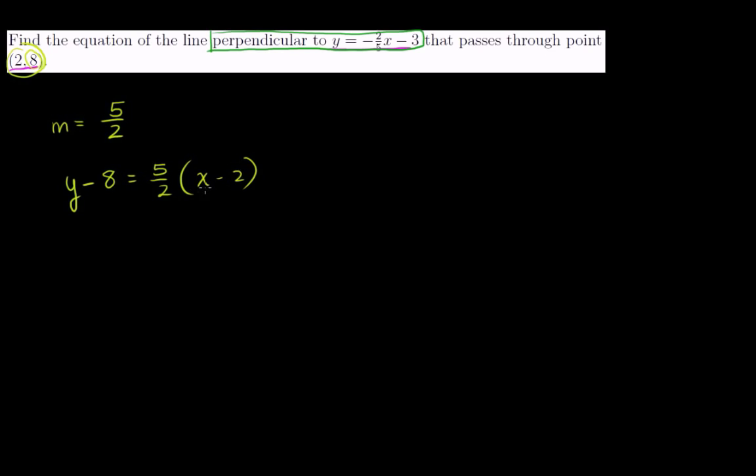And this is the equation of the line in point-slope form. If you want to put it in slope-intercept form, you can just do a little bit of algebraic manipulation. y minus 8 is equal to, let's distribute the 5/2, so 5/2 x minus 5/2 times 2 is just 5. And then add 8 to both sides. You get y is equal to 5/2 x. Add 8 to negative 5, so plus 3. And we are done.